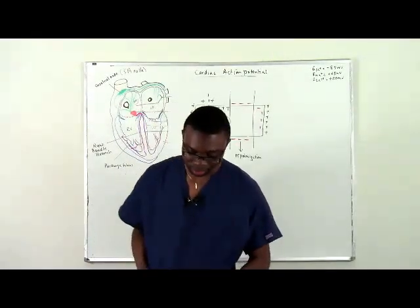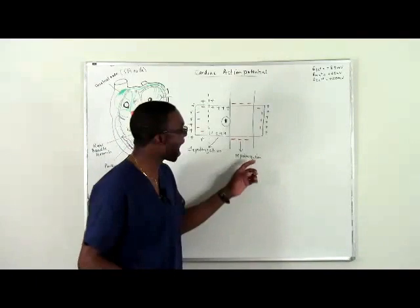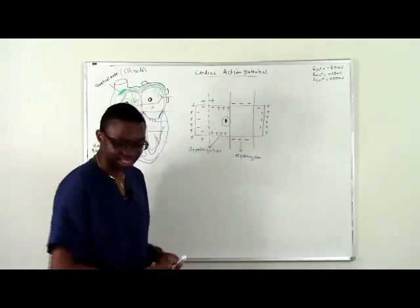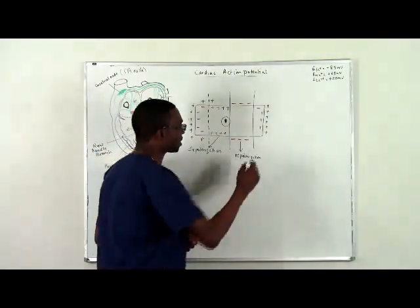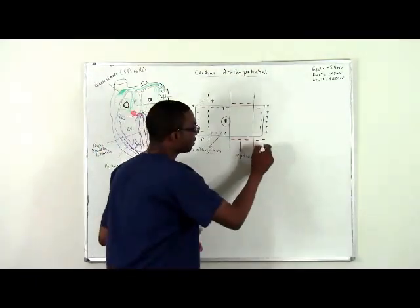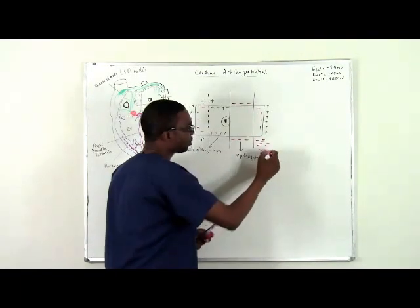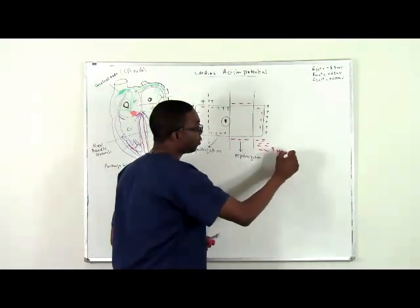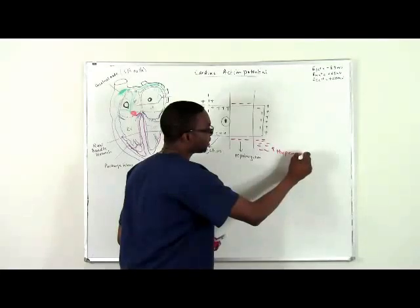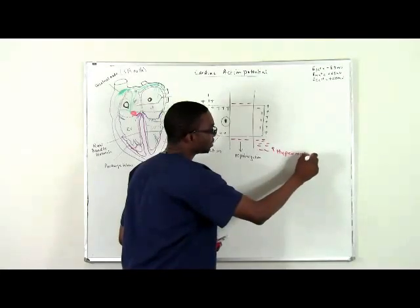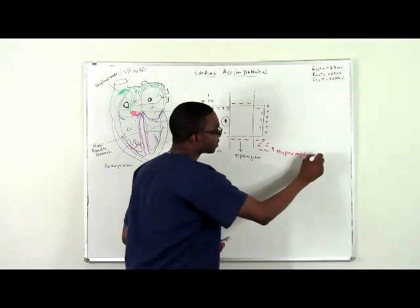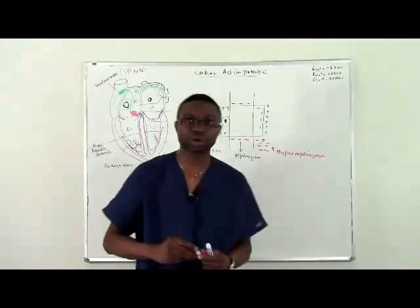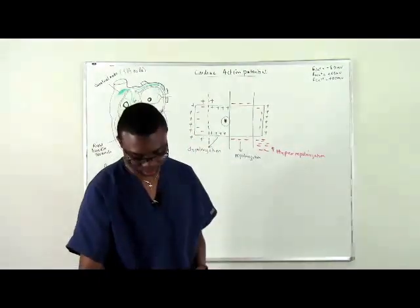When the outward current hyperpolarizes the cell, it means there are even more negative charges outside the cell — that is known as hyperpolarization, like too much repolarization. This will all make sense when we get to the SA node cardiac action potential.